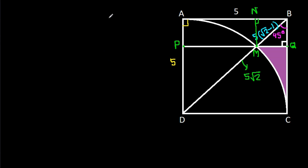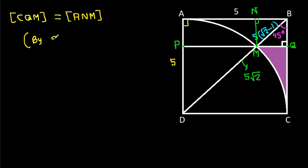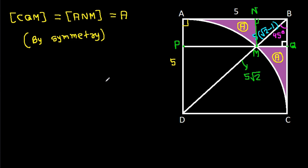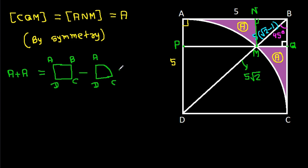Now the area of triangle CQM equals the area of triangle ANM by symmetry. Suppose each of these two areas equals A. Then A plus A will be the area of square ABCD minus the area of quarter circle ADC minus the area of quarter circle, which is pi times something, minus the area of square NBQM.